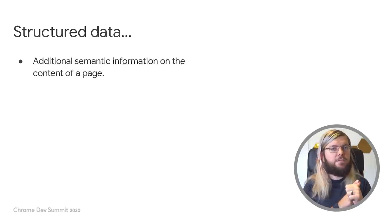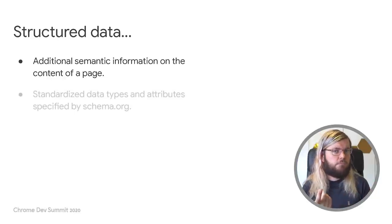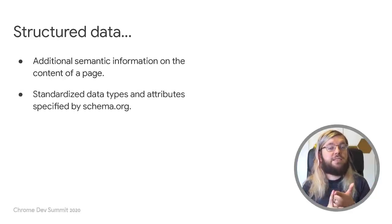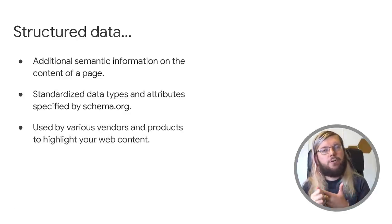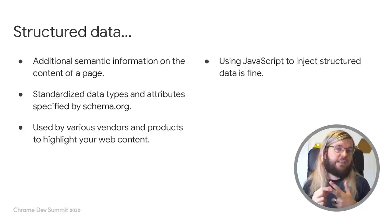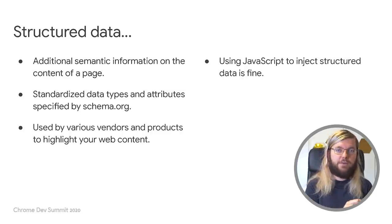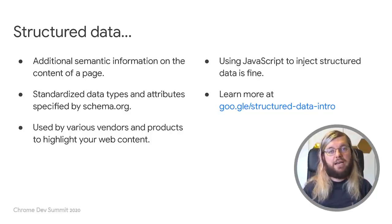Let's summarize: structured data is additional machine-readable information about the content of a web page. That information is standardized by the schema.org community body and used by various vendors and their products, including Google Search, to highlight your web content in various ways. For Google Search, it's fine to inject this information using client-side JavaScript. If you want to learn more, check out our intro guide on structured data in Google Search.